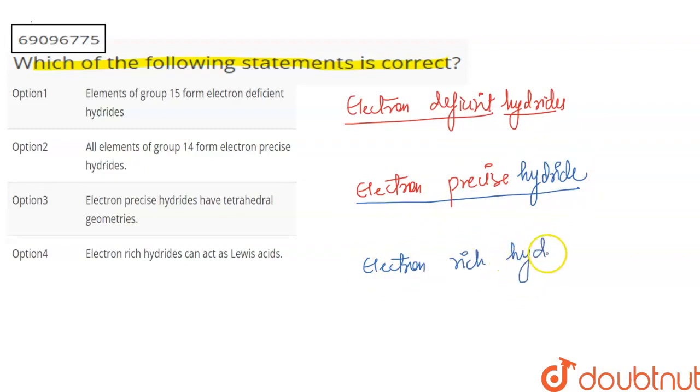You can understand one by one. I am doing electron-rich hydrides. So, electron-rich hydrides, for example, are a type of hydrides which have a number of electrons which are present.